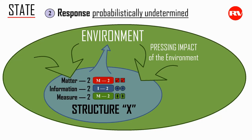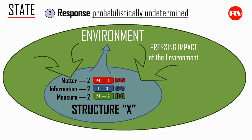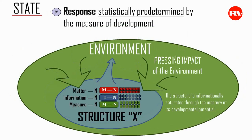Another impact — another quantum of warmth — and as a result the brick becomes more heated. Consequently, the measure and the informational state have changed. A response is again of a probabilistic random nature. Now imagine that this impact has been exerted throughout centuries. The measure is changing, the information is becoming saturated, the matter is changing, and the response is becoming probabilistically predetermined. The brick splits into two parts due to overheating. What's more, over time it turns into sand. This primitive example gives an understanding of how the process of the Trinity operates in reality.